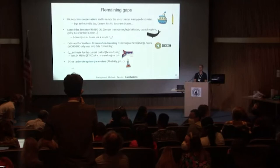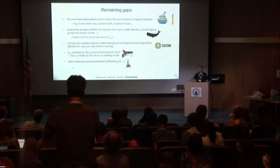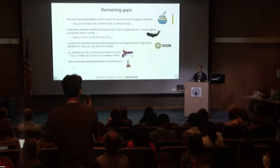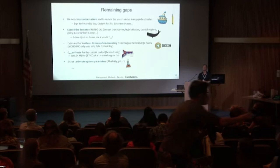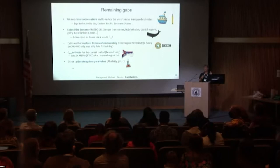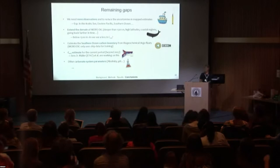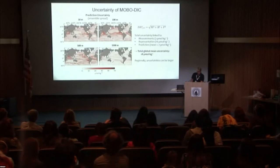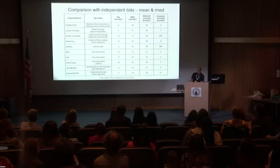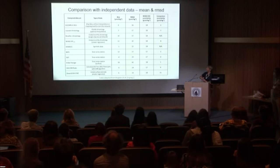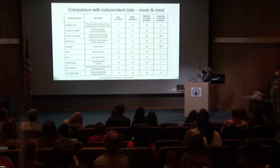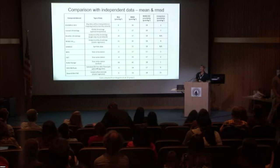Another question: regarding the uncertainty estimates — have you done an observing system simulation experiment like the one Gayle described, sampling a model with a similar distribution? Response: we have done a comparison with synthetic data using the HAMOCC model, part of the MPI model, where we did a similar thing but with just one model rather than an ensemble — creating synthetic data and running our method to see how well it works. The HAMOCC comparison roughly shows the bias and root mean squared error, but I don't have a map to show.